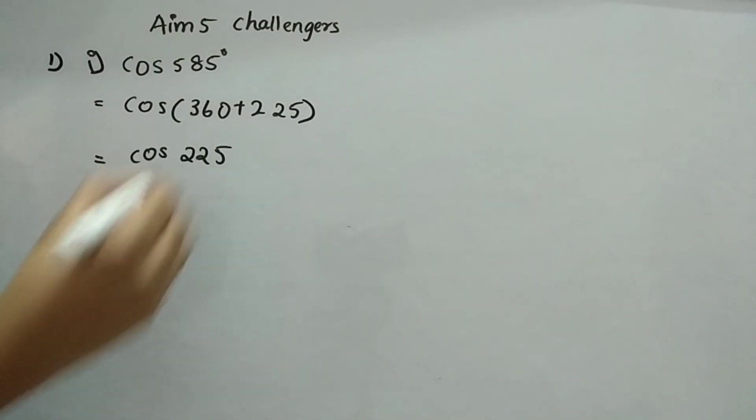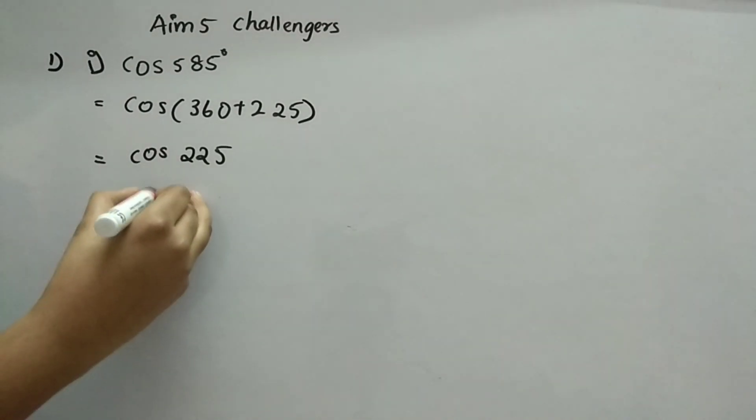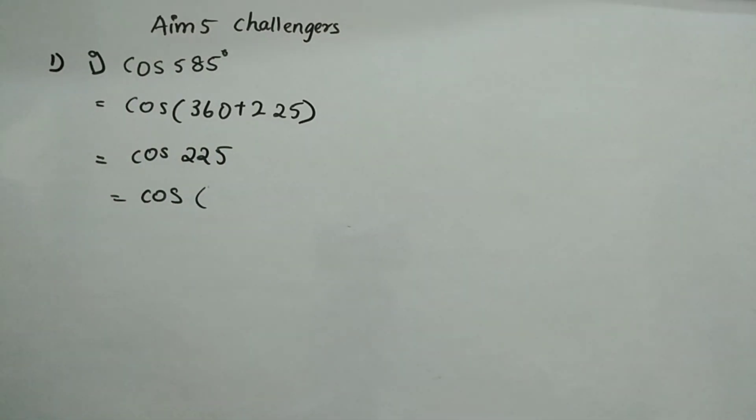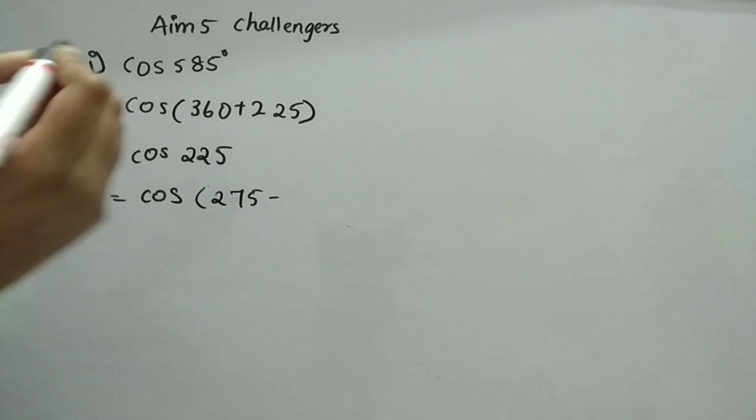So 225 you will write. So it will become cos 225 when you do like this. Now, what we will do is cos 225 can be written as 270 minus 45.